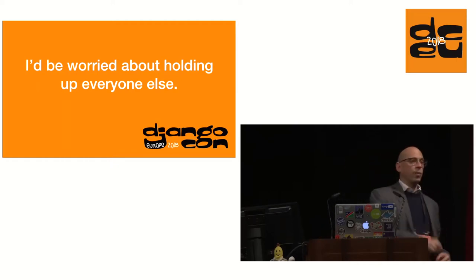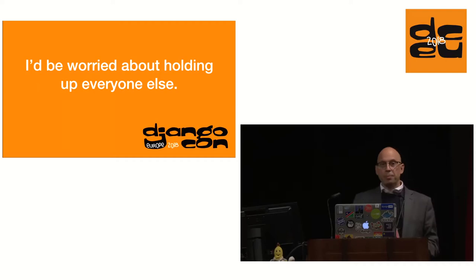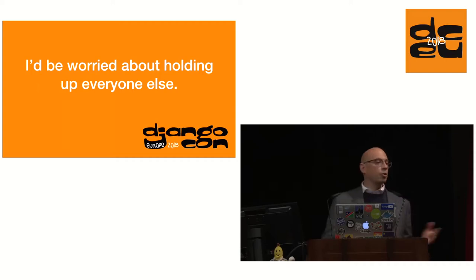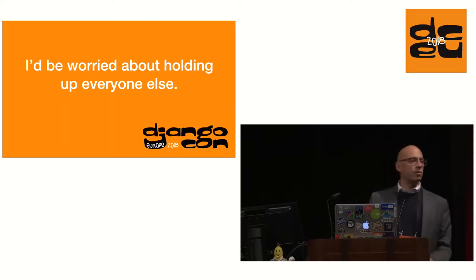When I went to my first code sprints, I dropped in just to see what it was. And the next year, somebody finally showed me how to use Git. And the third year, I ran a workshop showing people how to use Git. So that's the way it works. It might take you two or three years to do it, but that's fine. We're not in a hurry, even though it's called a sprint.